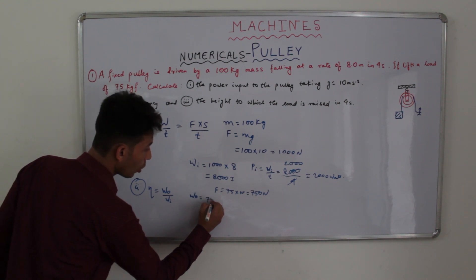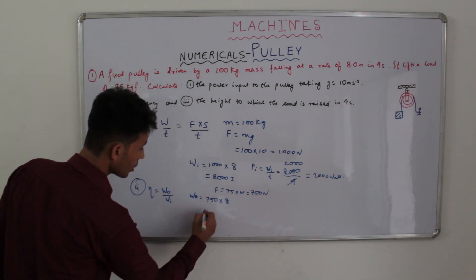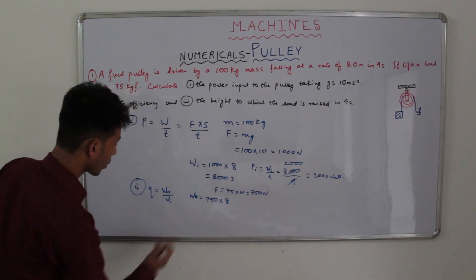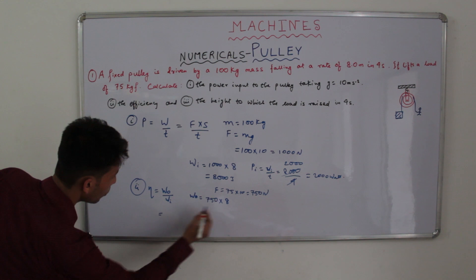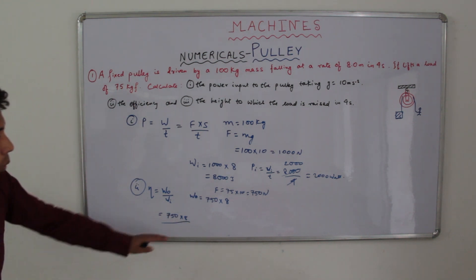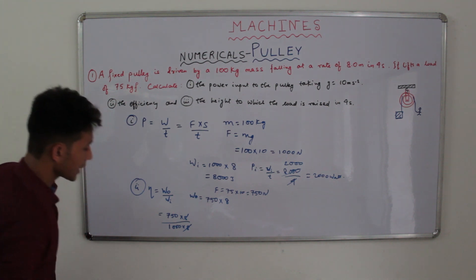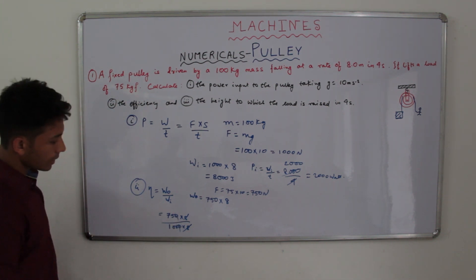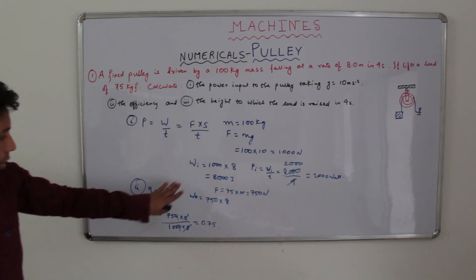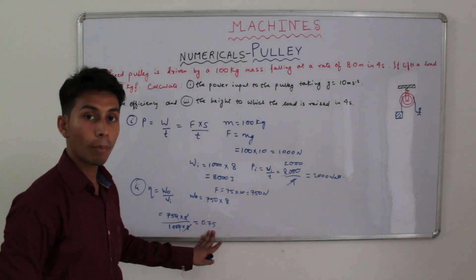So work done equals load 750 into displacement. Displacement is the same, that is 8 meters. So work output equals 750 into 8. Putting work output as 750 into 8 divided by work input 1000 into 8 — the 8s cancel, giving 75 by 100 equals 0.75. Since efficiency is a ratio of two similar quantities, it has no unit. So efficiency equals 0.75.